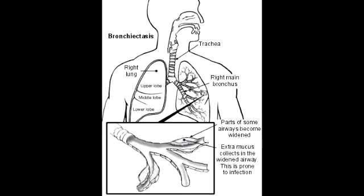What is bronchiectasis? Bronchiectasis is a disease state defined by localized, irreversible dilation of part of the bronchial tree caused by destruction of muscle and elastic tissue. Basically, this condition leads to a permanent dilation of the airways, which leads to purulent sputum, recurrent infections, and hemoptysis, which is coughing up blood.